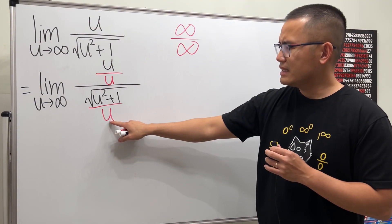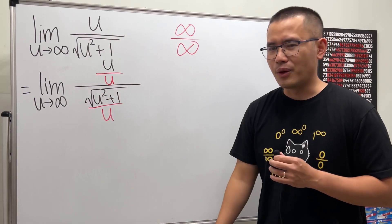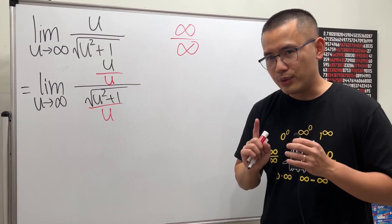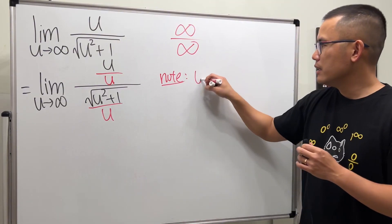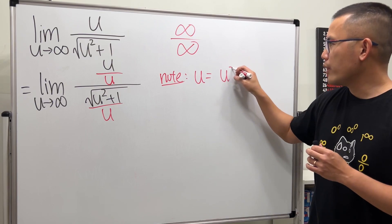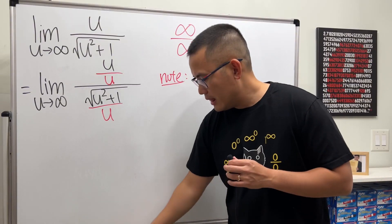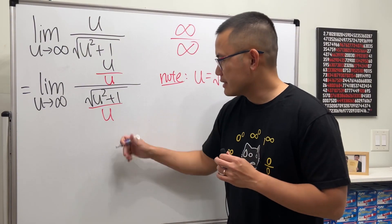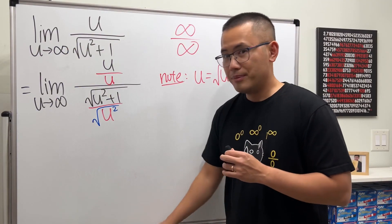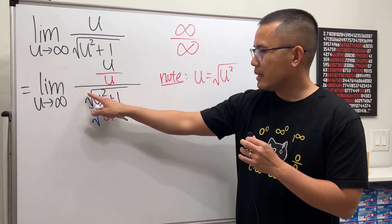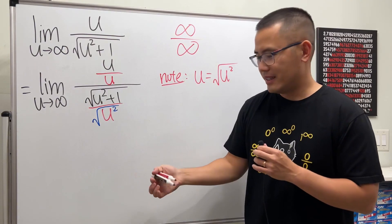And this, I need to bring that inside of the square root so they can somehow cancel. And in order to do that, notice that u, it's the same as saying u squared and you take the square root for it. So, for this right here, let me rewrite it as square root of u squared. Because this way, once they both have the square roots, we can put the u squared right here and right here.